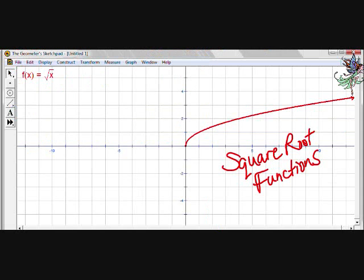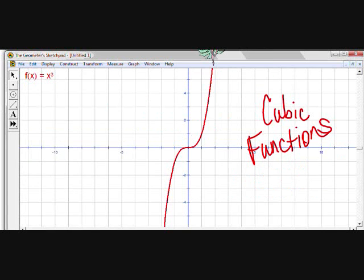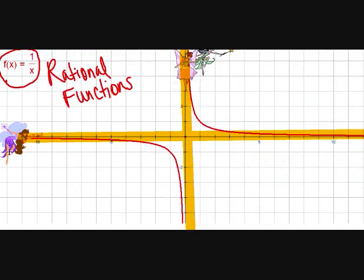If you notice, all of our other parent function graphs, they were continuous from their starting point on, or they went from negative infinity to positive infinity, and so on. But the rational functions, it's like the whole graph has been chopped into pieces.